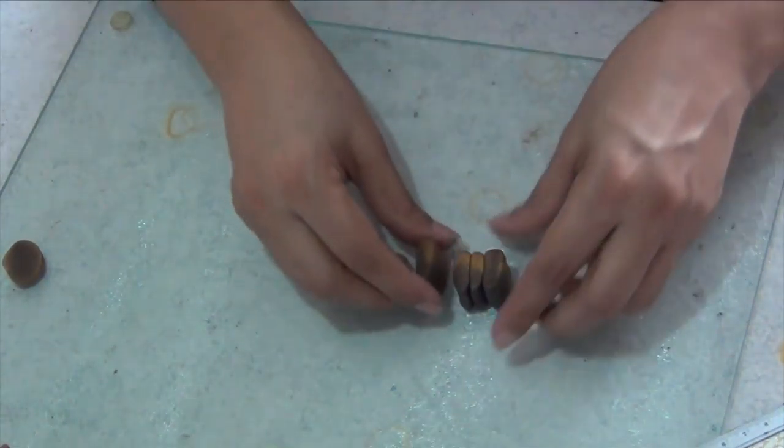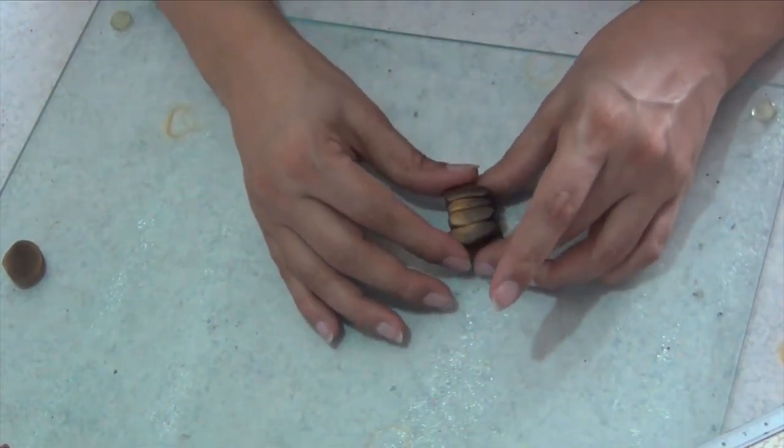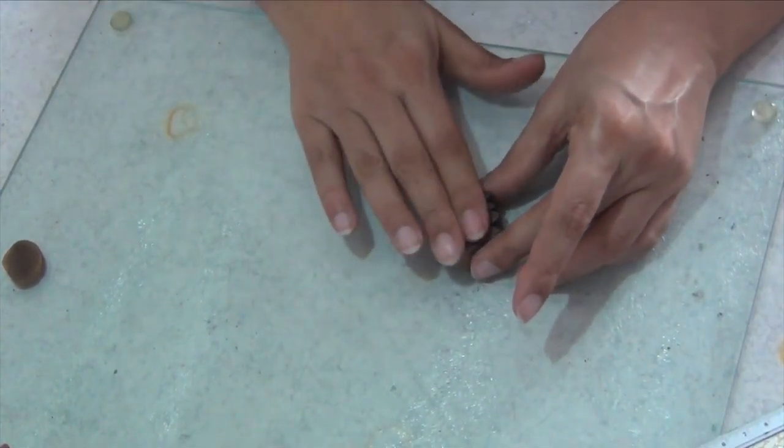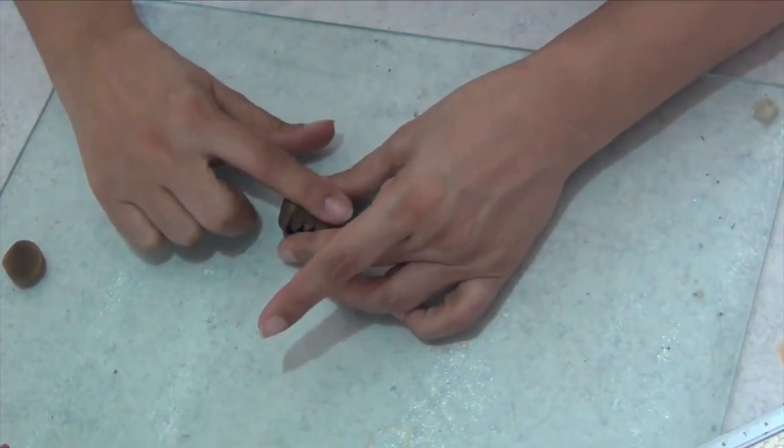Again I reshape this cane into a square and divide it into 2, making a square again and reshape it into a leaf form.